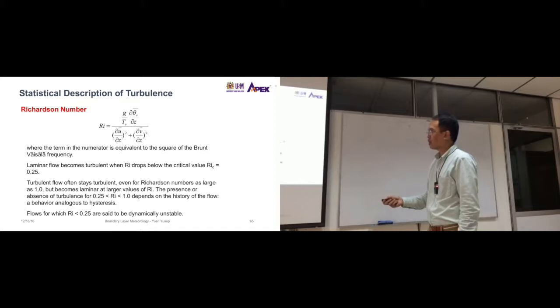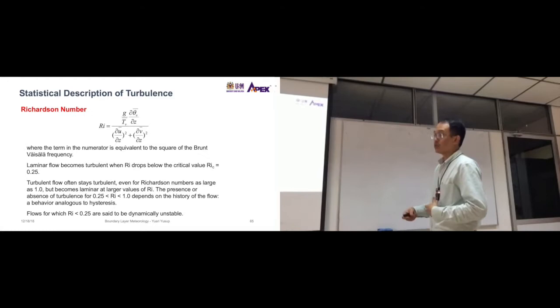Flows for which ri is less than 0.25 is more common are said to be dynamically unstable. So another point that this one implies is that anything that's more than 0.25 until 1 are stable atmospheres or semi-stable atmospheres. That's Richardson number.